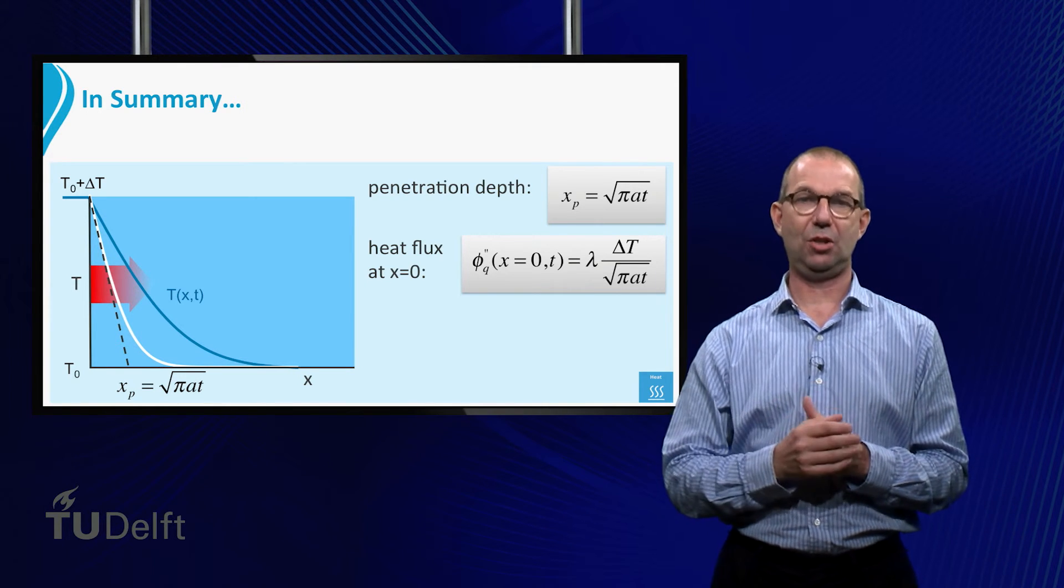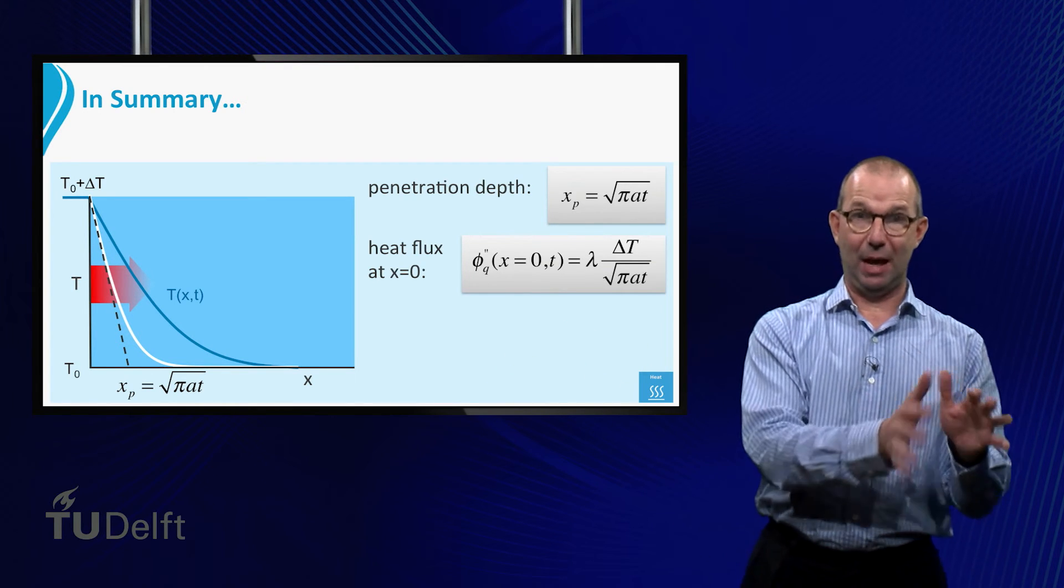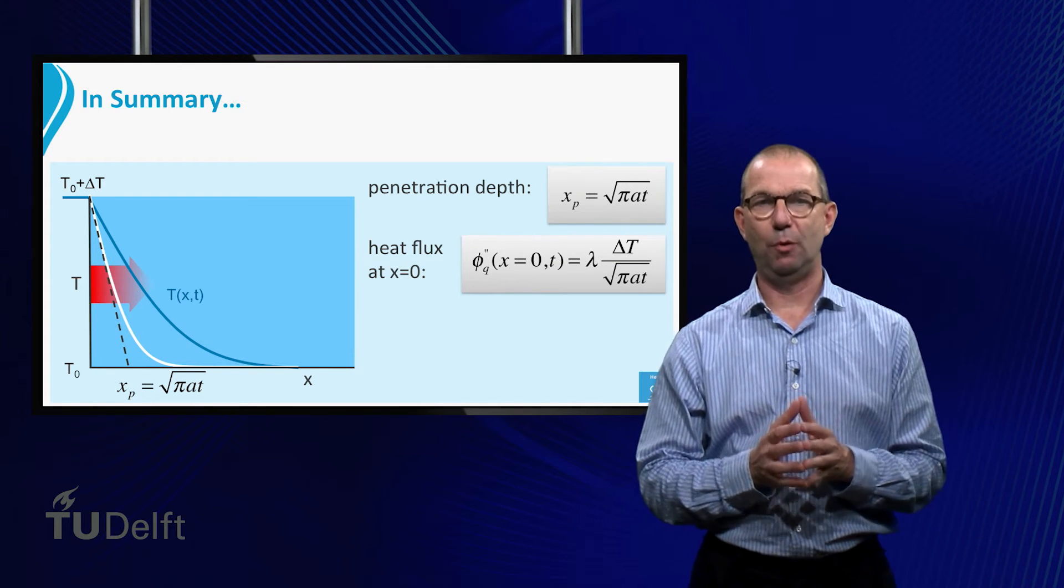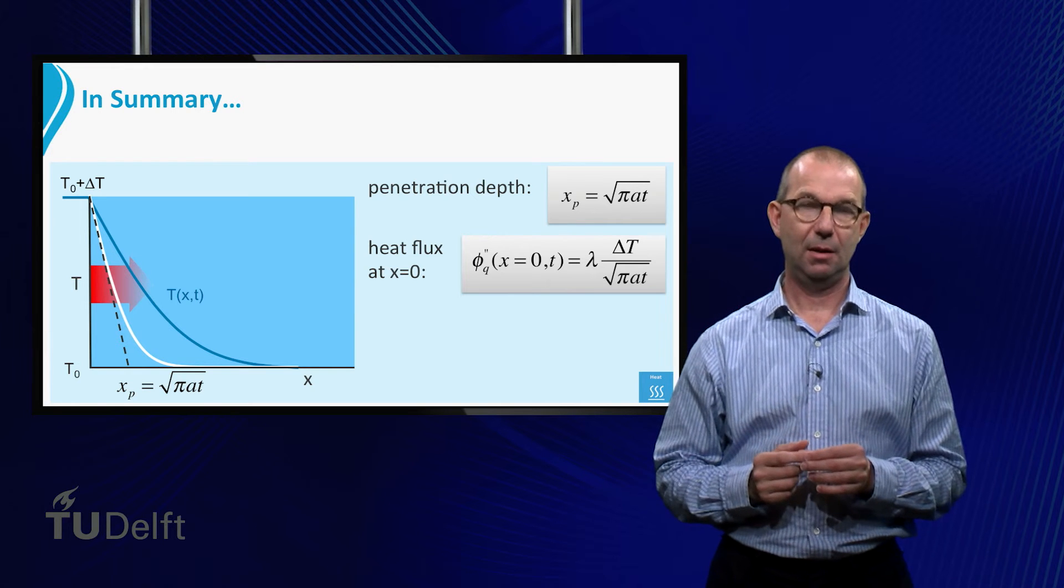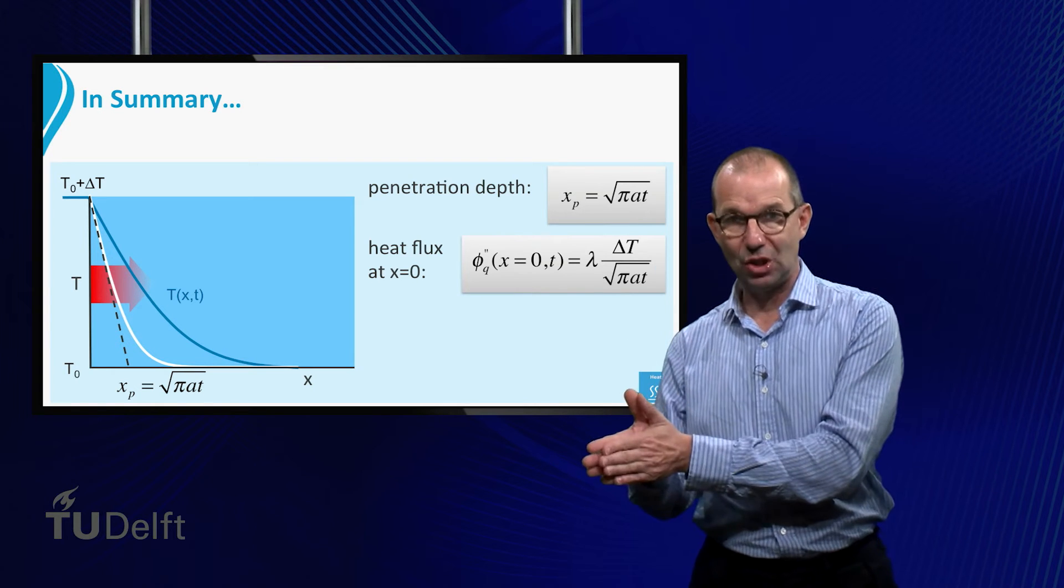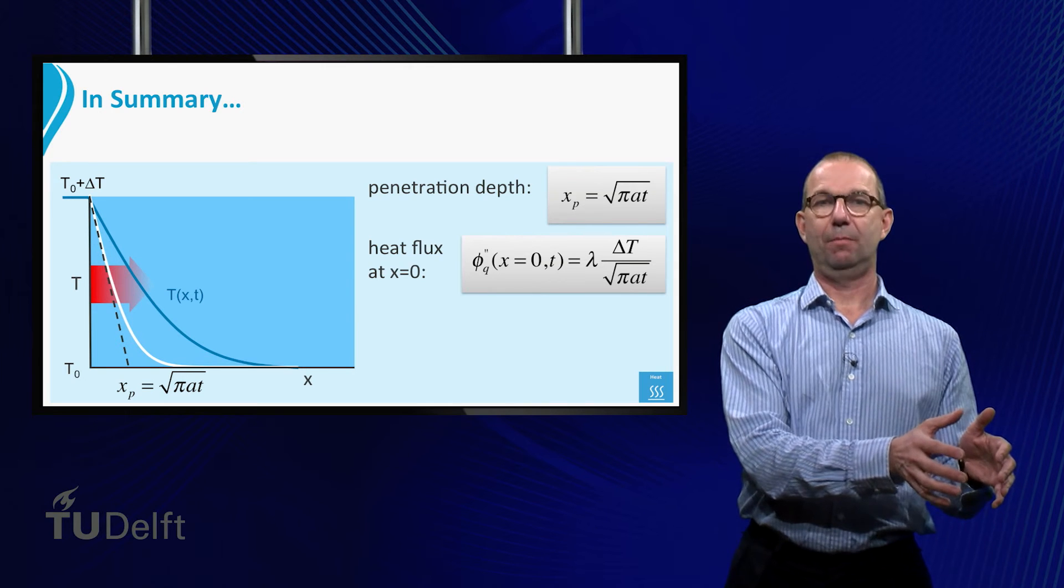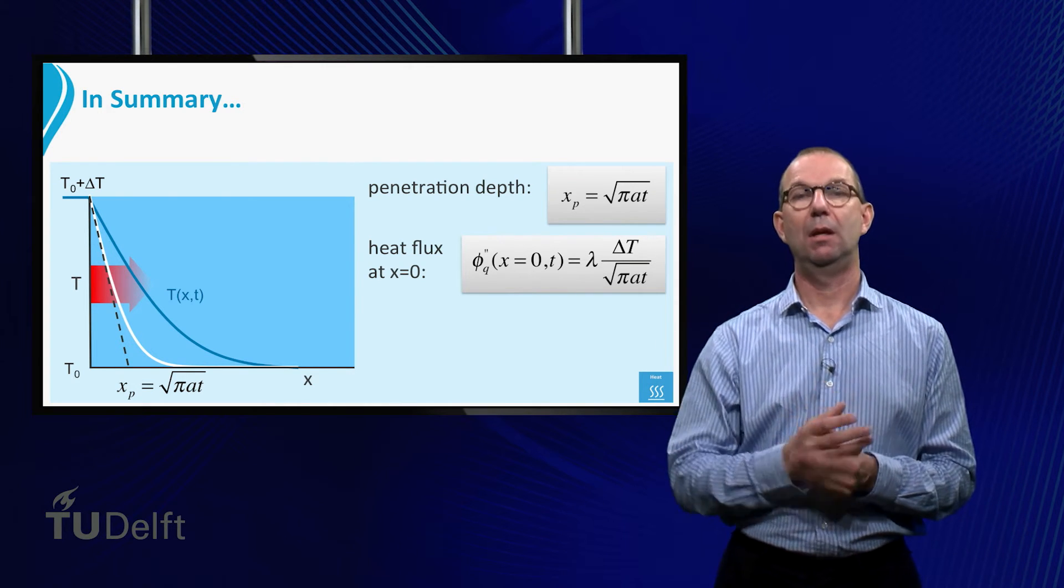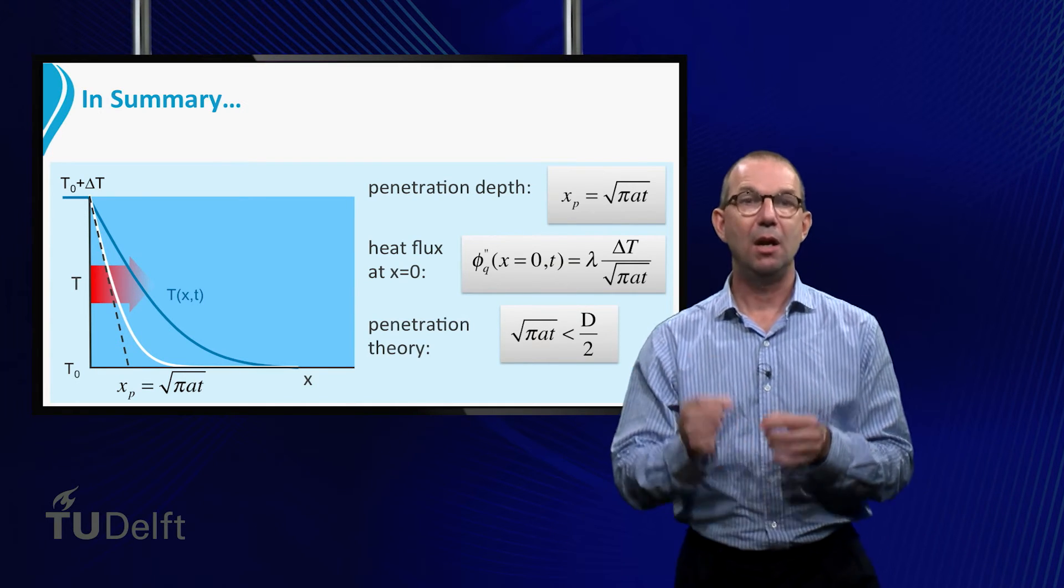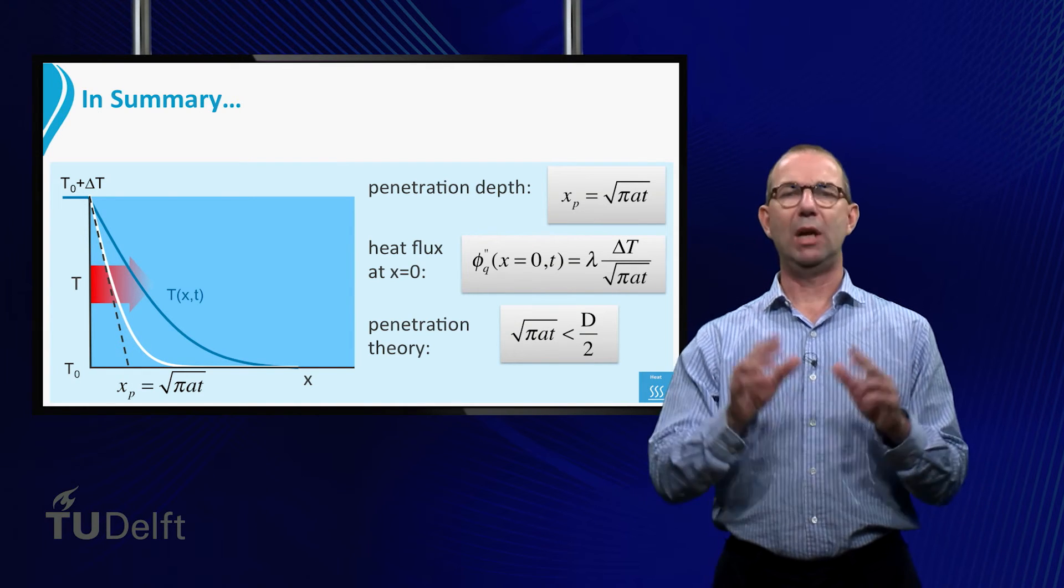In the theory we discuss here, we have heat from one end penetrating into the plate. The other end did not notice yet. This theory of heat conduction into a flat plate is called penetration theory. It is valid as long as the heat is conducted from one side into a flat plate and the other end does not know yet. This can be put into a simple equation. Penetration theory holds as long as the penetration depth is smaller than half the thickness of the plate. After that, we enter into another regime.